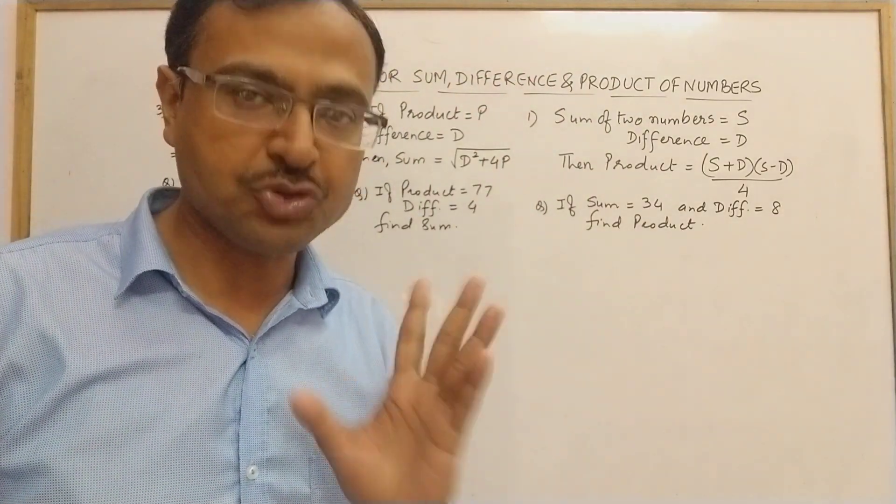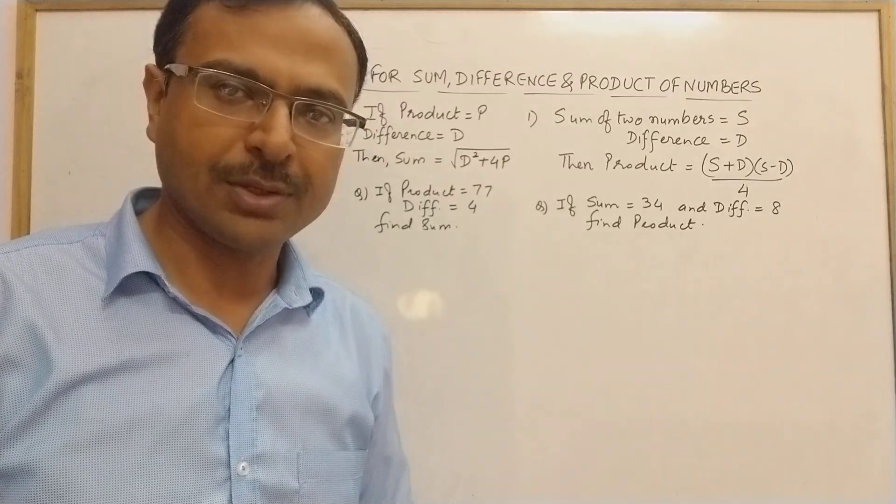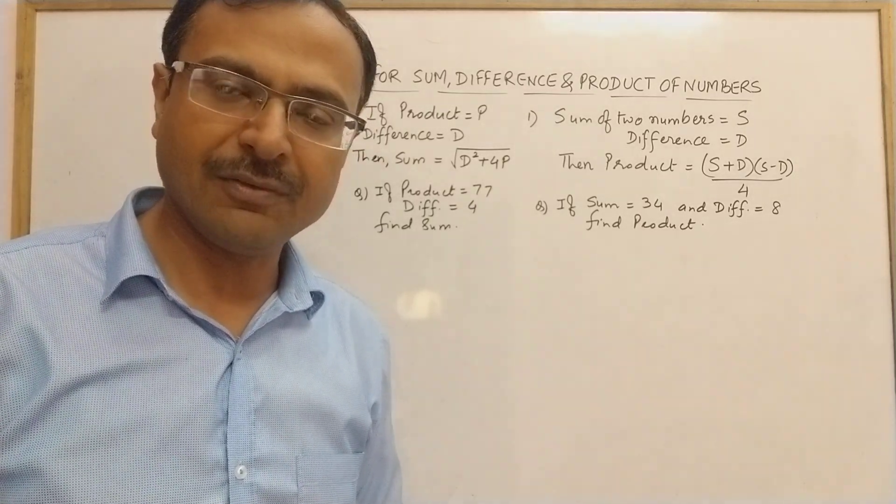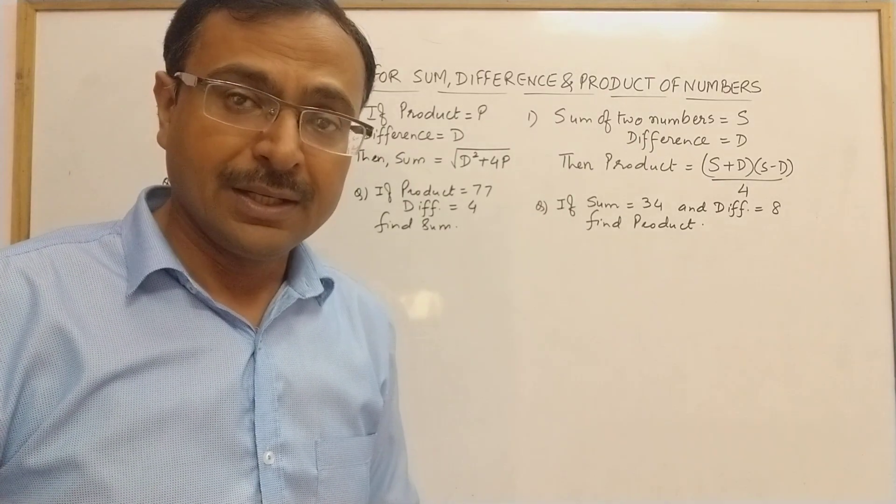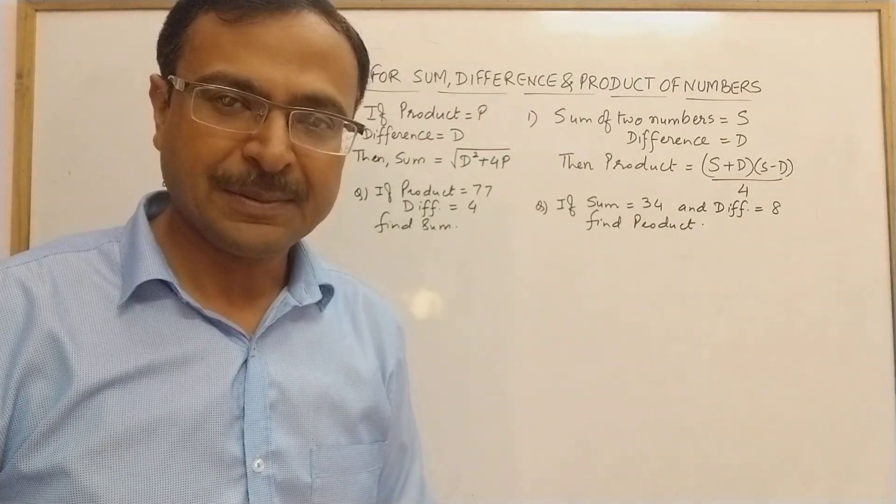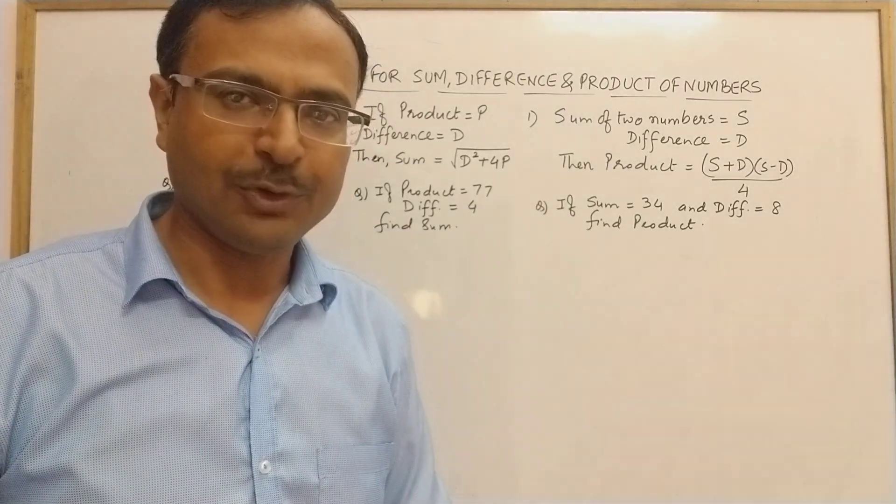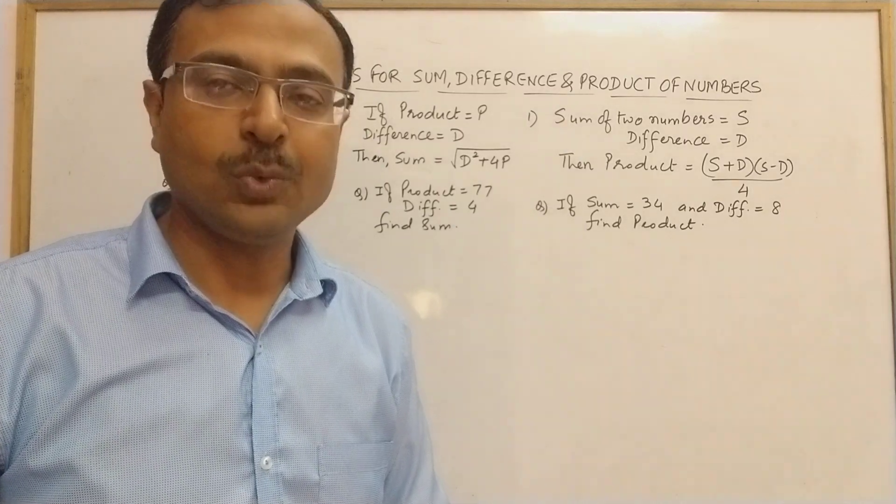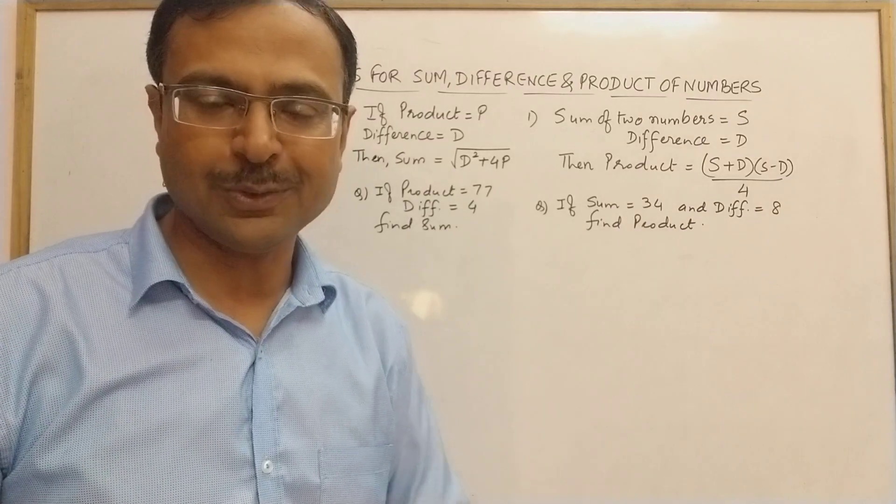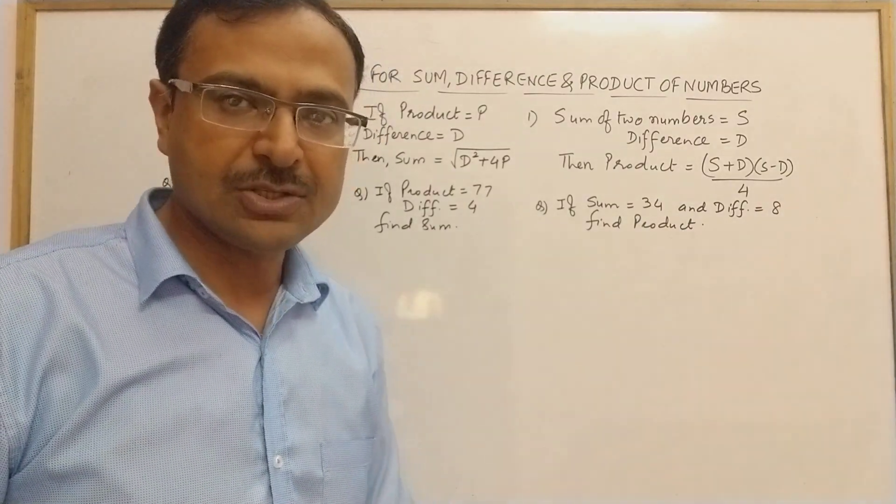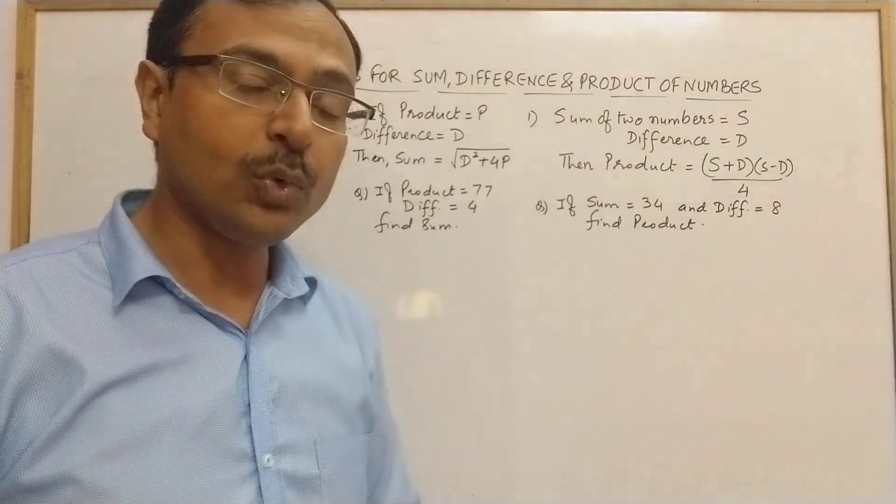This is very common in quantitative aptitude portions of competitive exams like banking, railways, SSC, CGL and others. Traditional methods use linear equations or quadratic equations, but if you are aware of shortcuts, the problem will consume just 10 seconds, versus spending time framing equations.